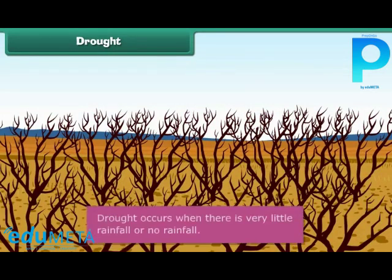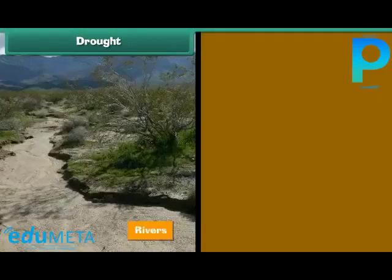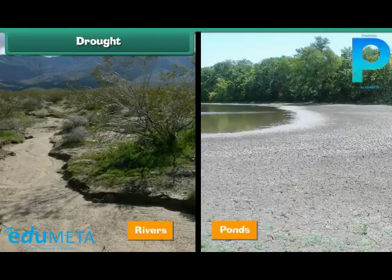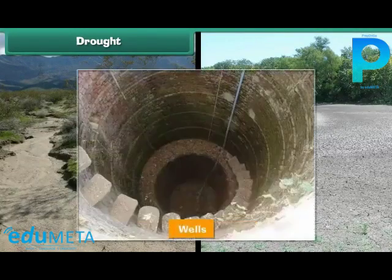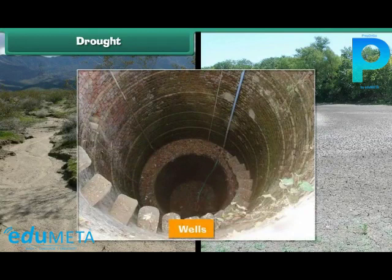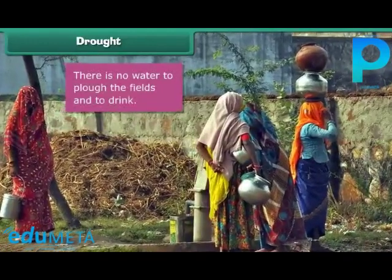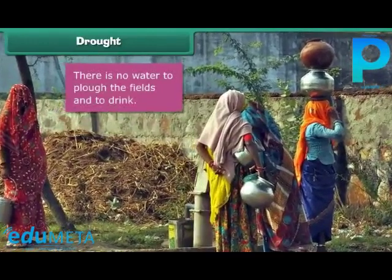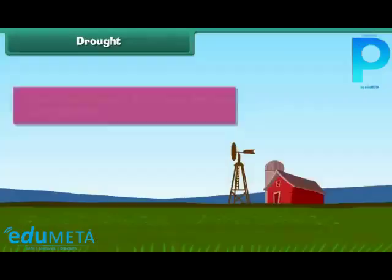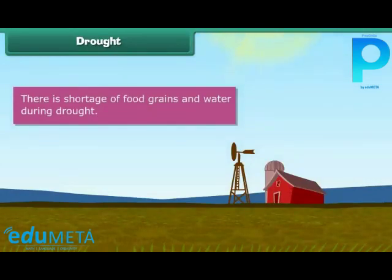Drought occurs when there is very little rainfall or no rainfall at all. During droughts, the rivers, ponds, wells and other water resources dry up. There is no water to plough the fields, and even drinking water is hardly available. There is shortage of food grains and water.